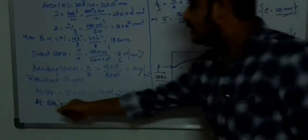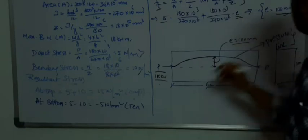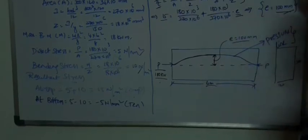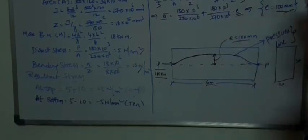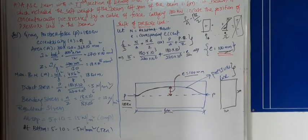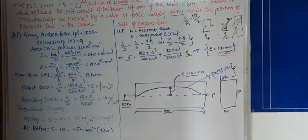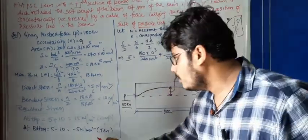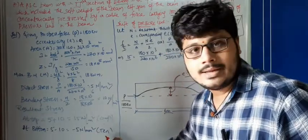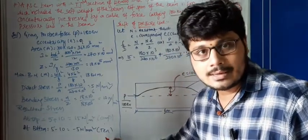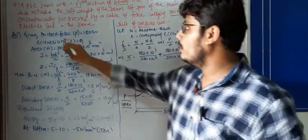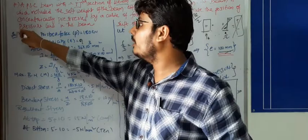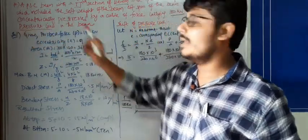The resultant stress is a combination of both direct and bending stress. At the top fiber, the stresses are added (plus and plus), and at the bottom fiber, they are subtracted. Now we need to find the pressure line location.